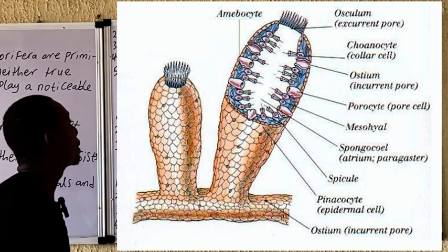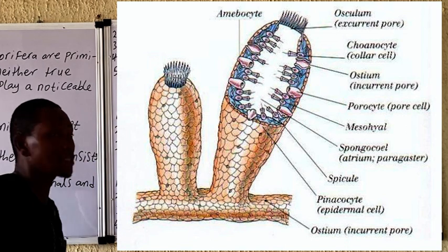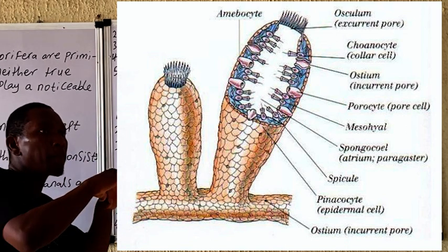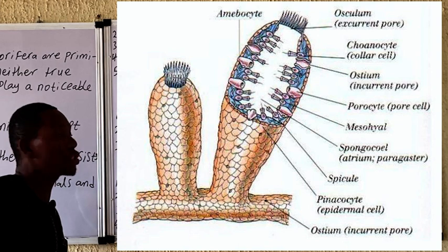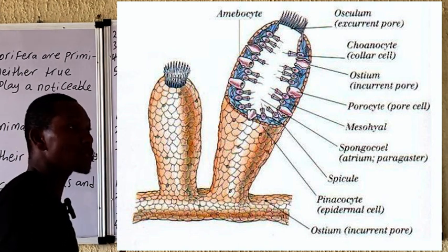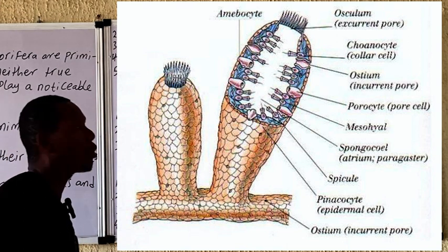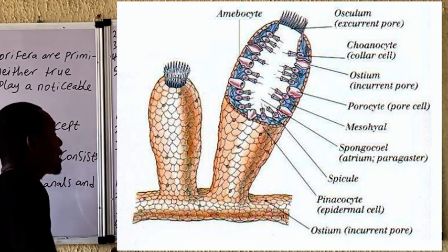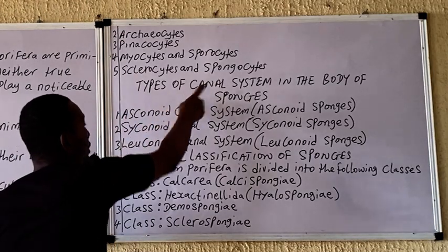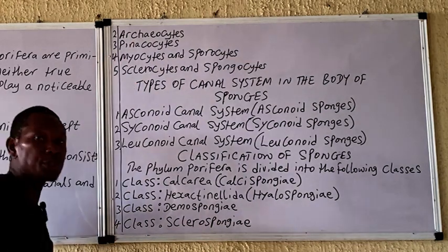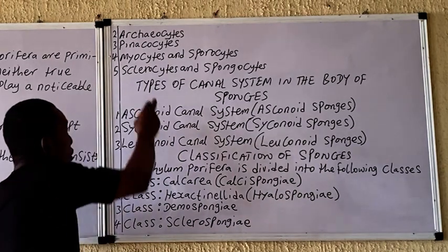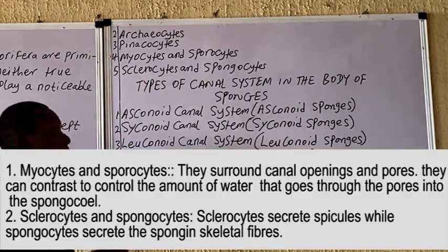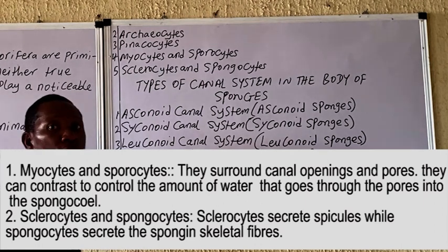The archaeocyte can also differentiate into collencytes that produce fibrillar collagen, or lophocytes that produce collagen. We also have the myocytes and porocytes, which are present at the openings of the canals or pores of the sponges. They contract and relax to regulate movement of water through the body of the sponges. The sclerocyte, differentiated from the archaeocyte, produces the spicules, while the spongocyte produces the spongin fiber.